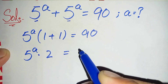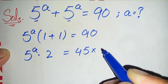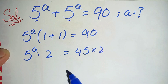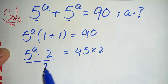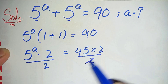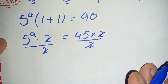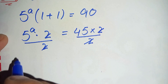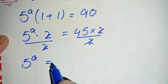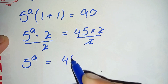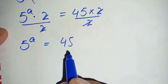This is equal to 90, and we can write 90 as 45 times 2. We will divide both sides by 2 to eliminate the 2 from the left hand side. The 2 cancels from numerator and denominator, so further it becomes 5 raised to power a is equal to 45.